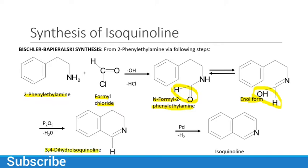N-formyl-2-phenylethylamine is converted into 3,4-dihydroisoquinoline, which is then converted into isoquinoline by elimination of H2 in the presence of the catalyst palladium (Pd). So 2-phenylethylamine reacts with formyl chloride to form N-formyl-2-phenylethylamine, which is in resonance with its enol form, and the intermediate 3,4-dihydroisoquinoline gives the final product isoquinoline.